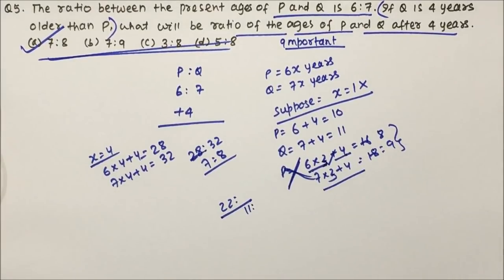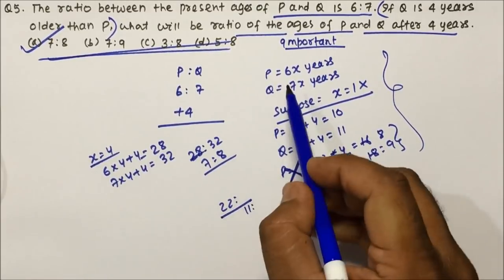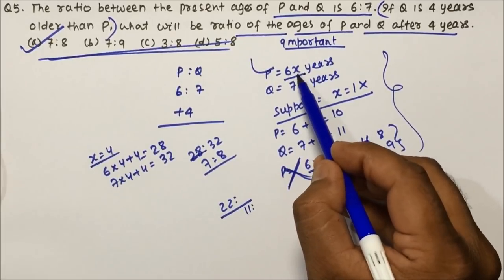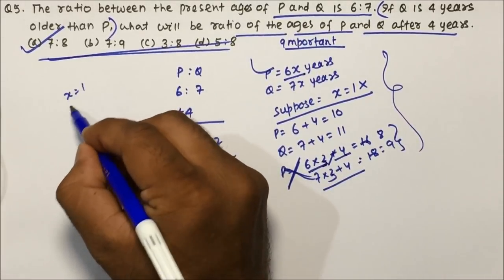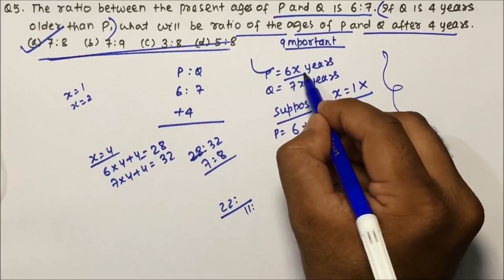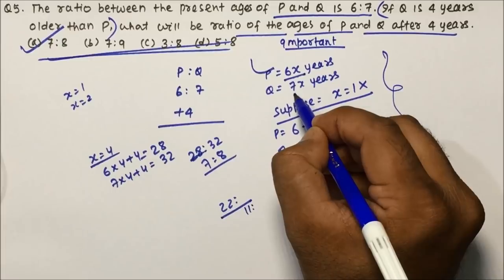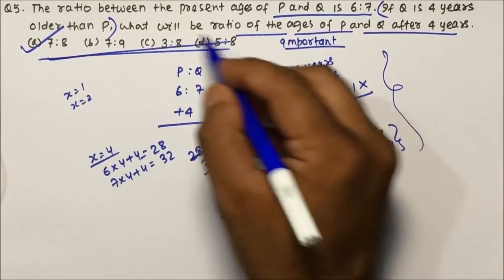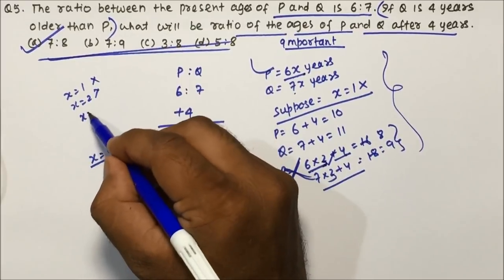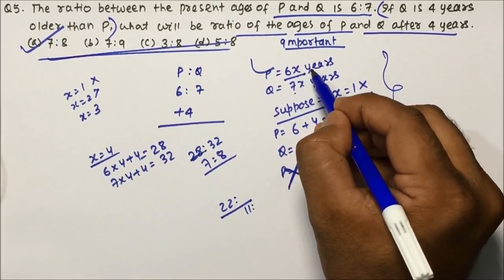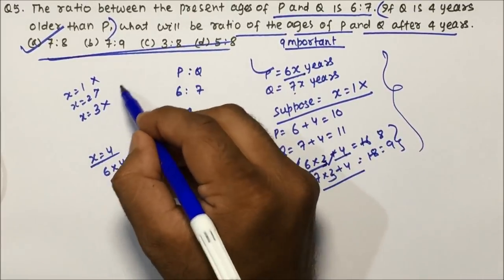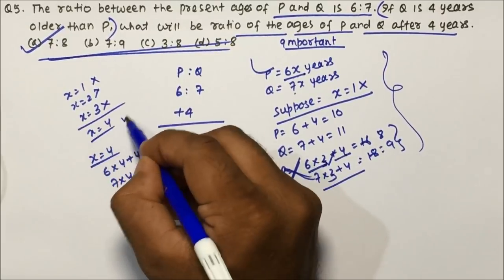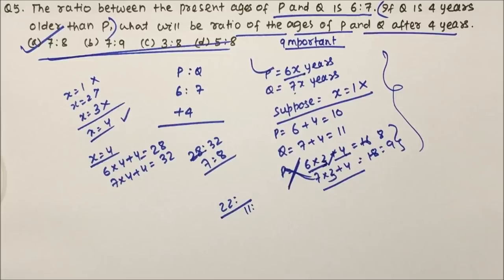Because I am explaining here I am taking x equals 1, 2, 3, and 4. Otherwise you can take it directly. At x equals 1: 6 plus 4 is 10 and 7 plus 4 is 11, giving 10 is to 11 — no option. At x equals 2: 16 and 18 giving 8 is to 9 — not there. At x equals 3: 18 plus 4 is 22, a multiple of 11, but no option starting with 11. So at x equals 4 we get the answer. This kind of question is very important.